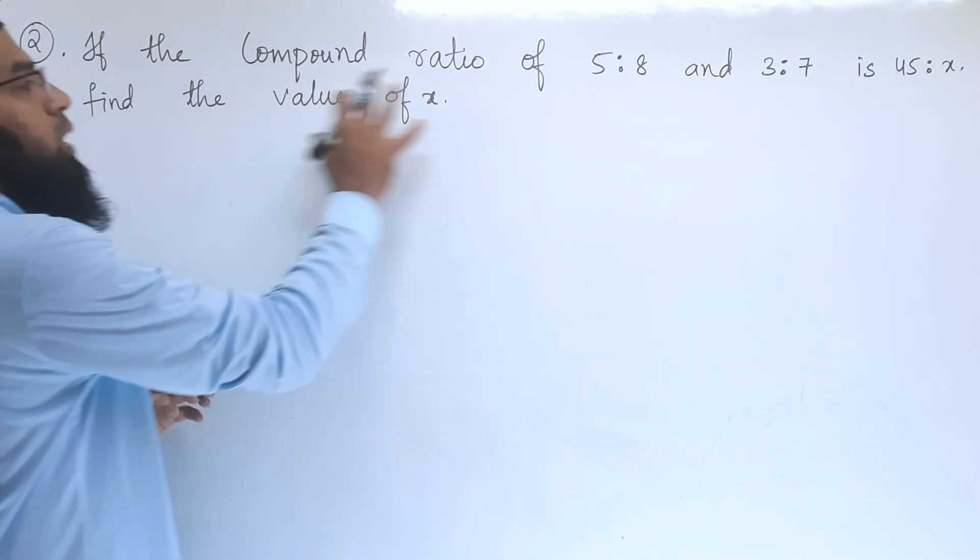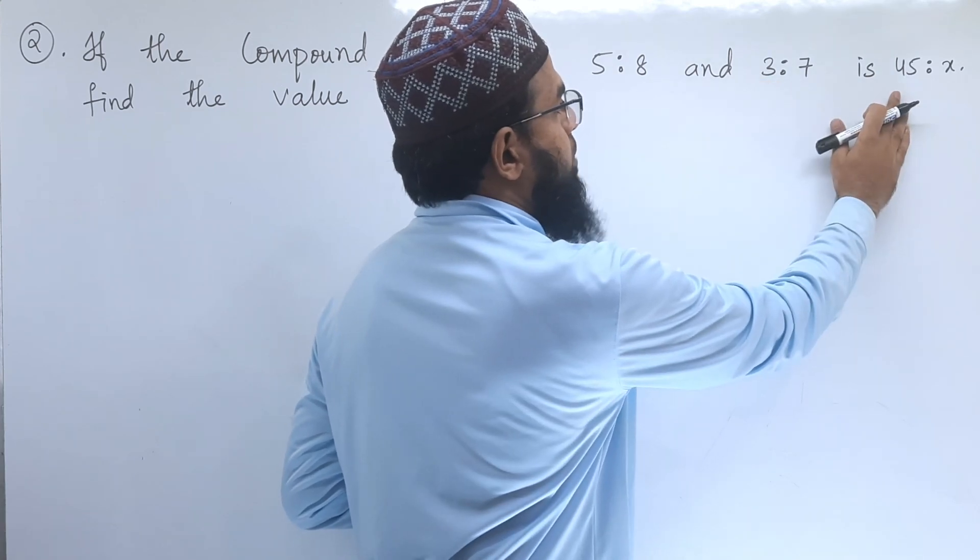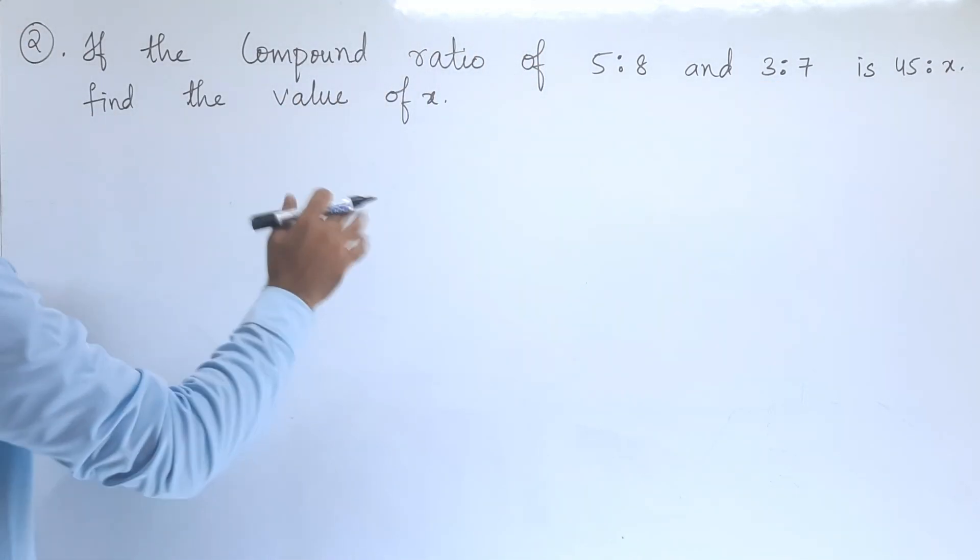Second problem: if the compound ratio of 5:8 and 3:7 is 45:x, find the value of x.